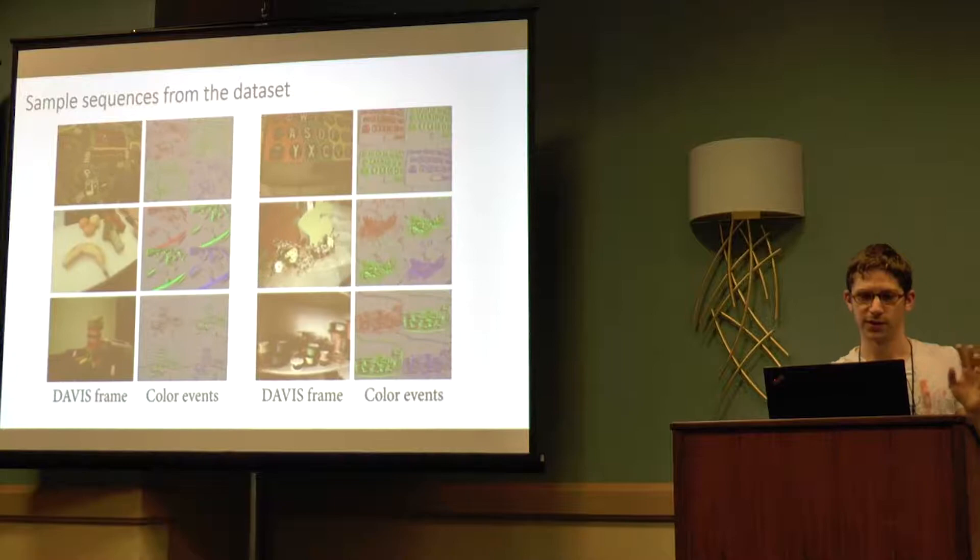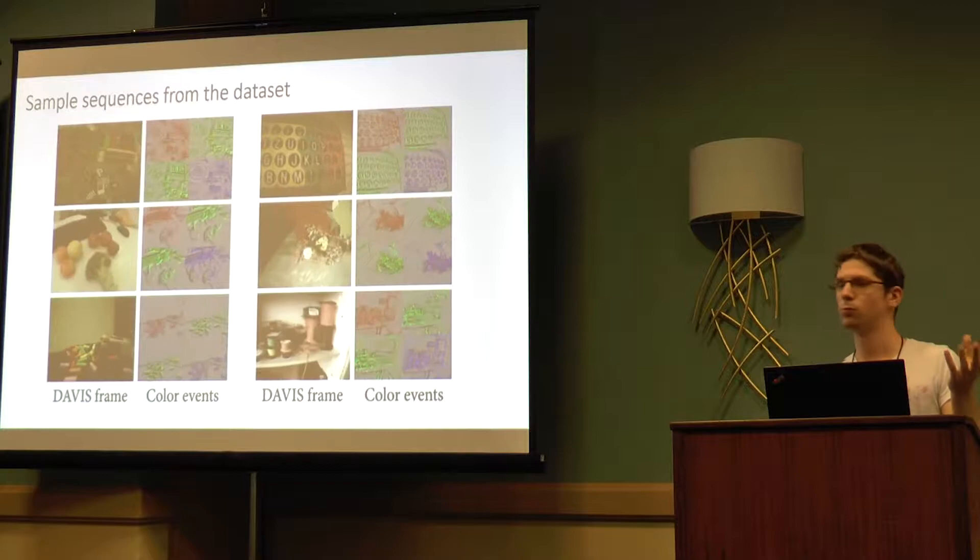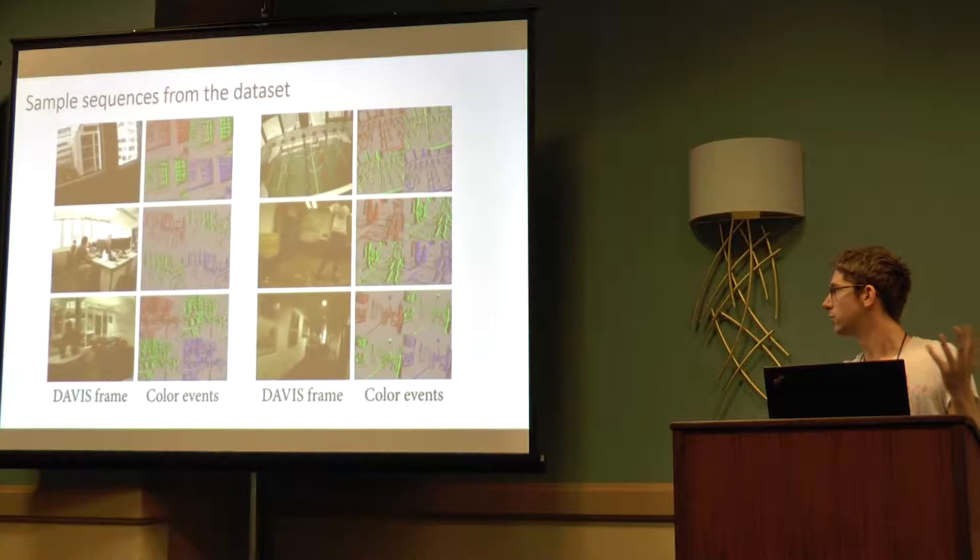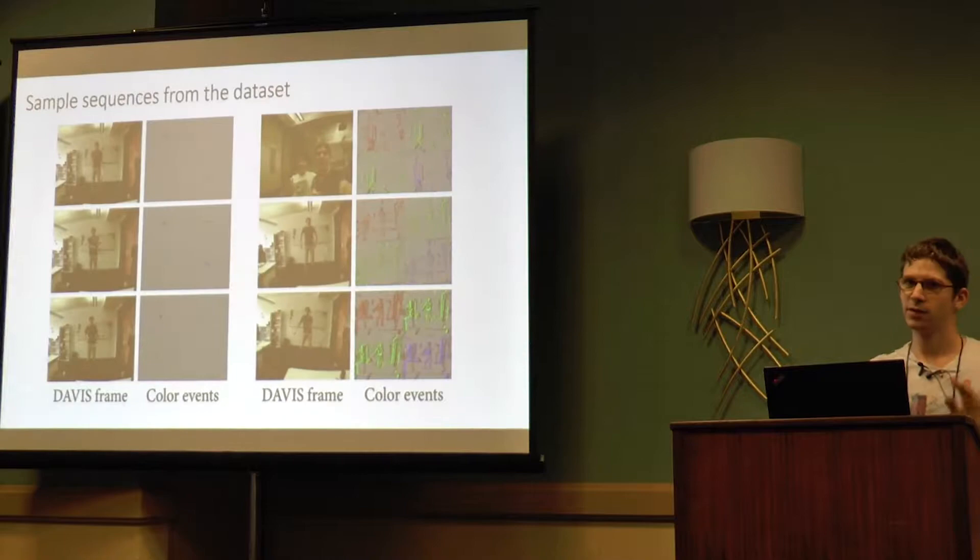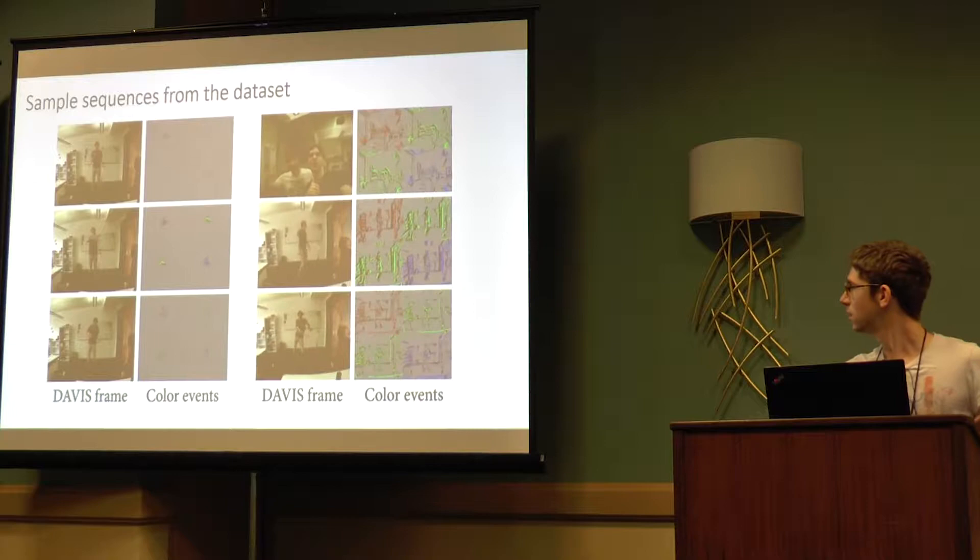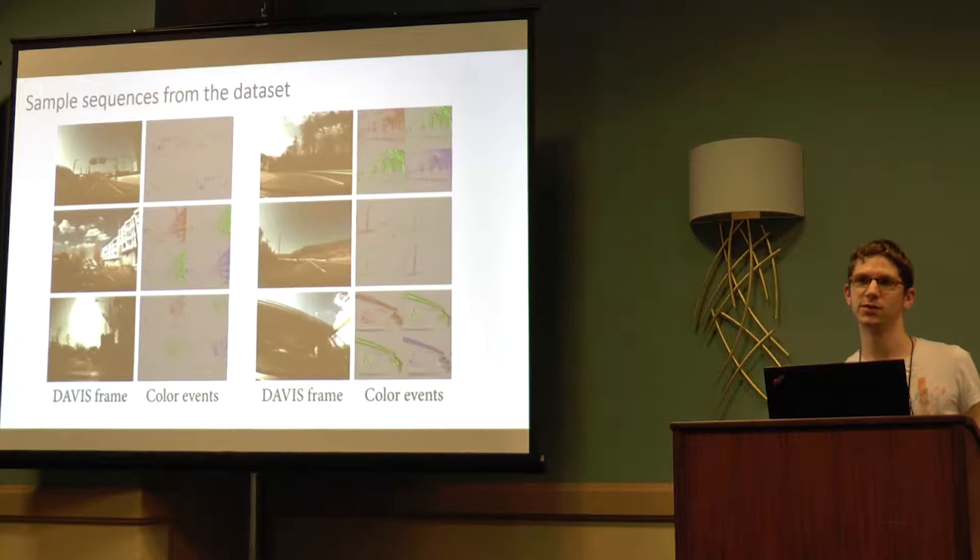I'm now showing examples from the dataset. In each case you can see the Davis frames and one visualization of color events. Our dataset includes both indoor scenes, synthetic scenes and outdoor scenes. We also have people moving with labels, where we think color might improve detection results.